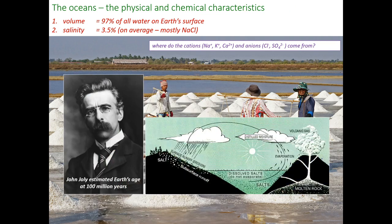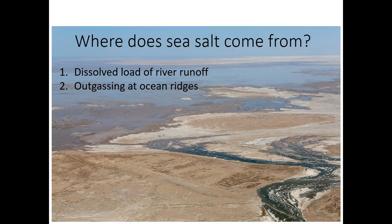A gentleman named John Jolly tried to figure out the age of the Earth using the saltiness of the ocean. He calculated how much salt was in the ocean and how much rivers bring in per year, and concluded the Earth was about 100 million years old. He was way off because he didn't know about plate tectonics and processes that remove salt from the ocean. Still, it was an interesting attempt before the age of radiometric dating, which uses radioactive isotopes to calculate Earth's age.